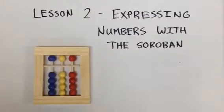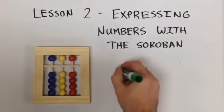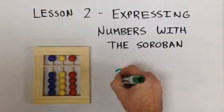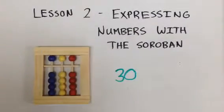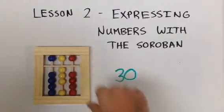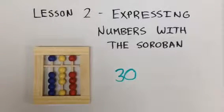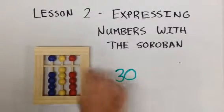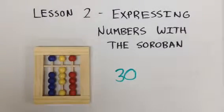How would we express the number 30? Take our thumb and move up three yellow beads. Zero on the units. This is the number 30.